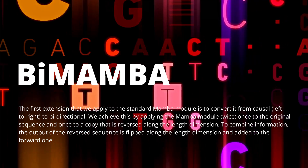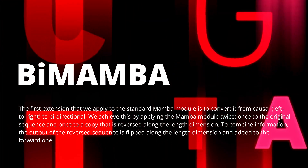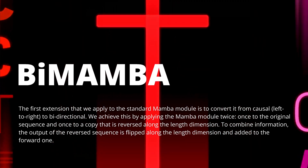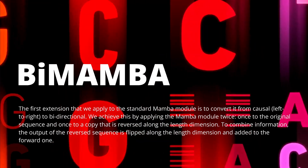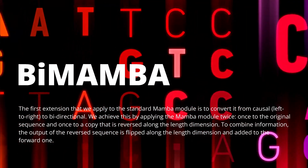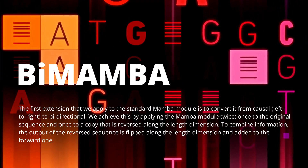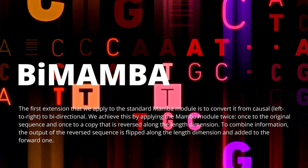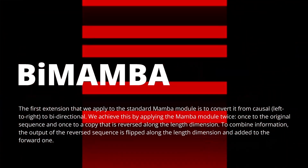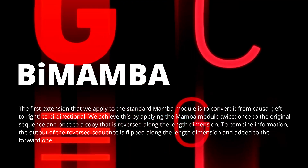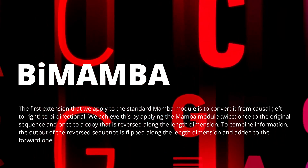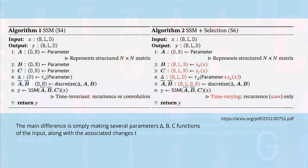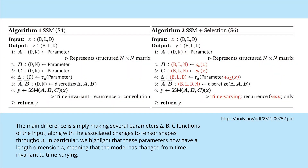The authors achieved this by applying the Mamba module once to the original sequence of the double helix and once to a copy that is reversed along the length dimension. To combine the information, the output of the reverse sequence is flipped again along the length dimension and added to the forward one — a simple concatenation in mathematical terms.